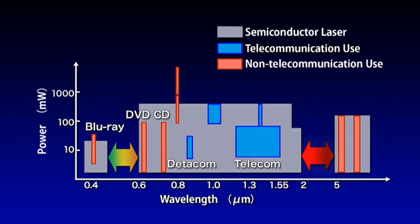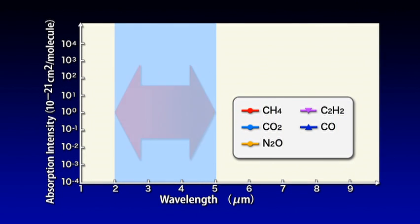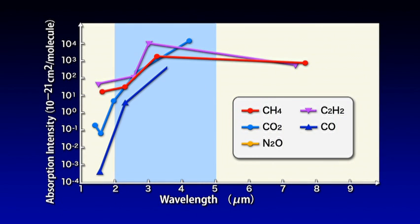The molecules of various gases such as carbon dioxide and methane have strong absorption wavelengths in the mid-infrared range. For some time there has been a great demand for a compact mid-infrared laser light source so that the strong absorption wavelengths can be used for highly sensitive environmental measurement and gas analysis.